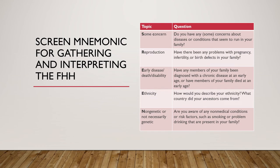The mnemonic SCREEN helps guide family history: Some Concerns — do you have any concern about a disease or condition running in the family? Reproduction — birth defects, infertility, especially important with family planning. Early disease, death, and disability — do any family members have early age diseases, like premature coronary artery disease? Ethnicity — what do you identify as, what country are your ancestors from? And Non-genetic factors — smoking, drinking, mental health issues that are prevalent in the family.